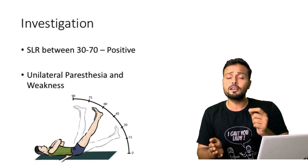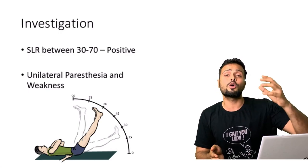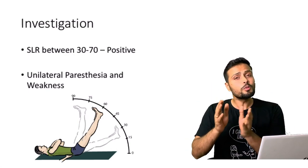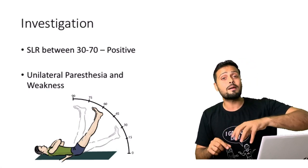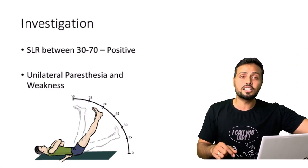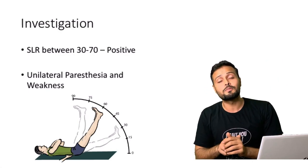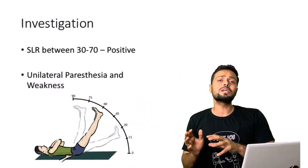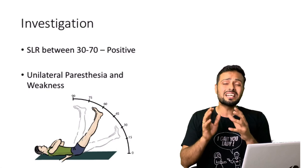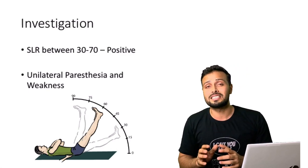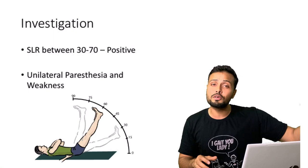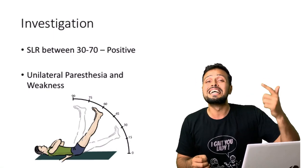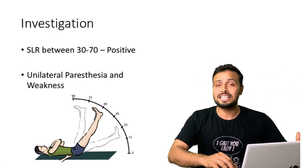It's not only sciatic nerve compression — any nerve root compression pain will be elicited in this 30 to 70 degree range. If you want to know more about SLR 1, SLR 2, SLR 3 — what happens if pain is aggravated above 70 degrees or less than 30 degrees — you can click on the linked video for more information. Apart from the SLR test, we can also check for unilateral paresthesia and muscle weakness. According to the course of the nerve, if the muscles along the same nerve root are weak or the patient is feeling paresthesia, that again confirms that the patient has sciatica.